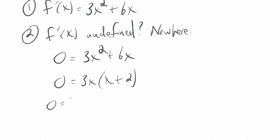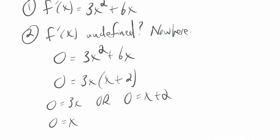Step two: where is f'(x) undefined? This is a quadratic function, so nowhere — we won't get a critical number that way. Now set the derivative equal to zero: 0 = 3x² + 6x = 3x(x + 2). Using the zero product property: 0 = 3x gives x = 0, and 0 = x + 2 gives x = -2. So my two critical numbers are 0 and -2.